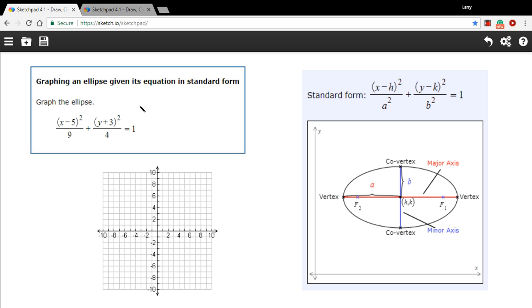Here we're being asked to graph an ellipse and we're given its equation in what's called standard form and this is something you should get familiar with. For an ellipse, standard form is always set equal to one and then we've got denominators here underneath the x squared term and a y squared term.